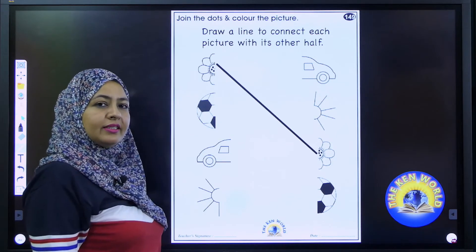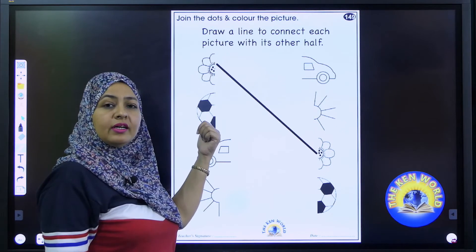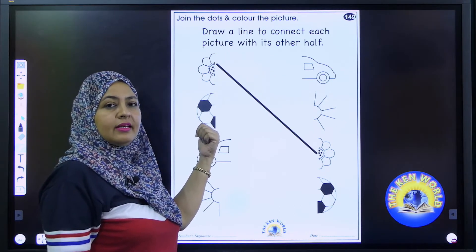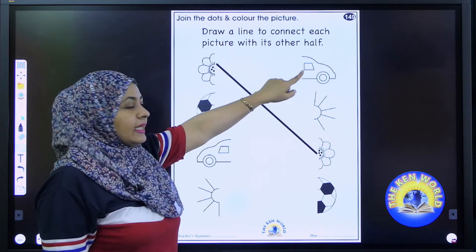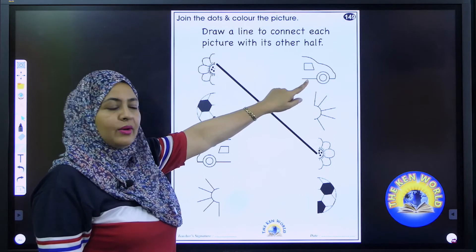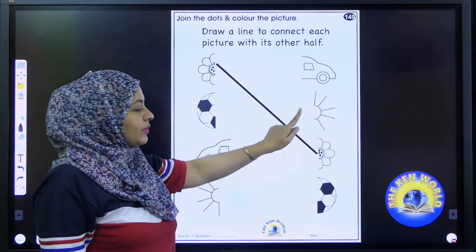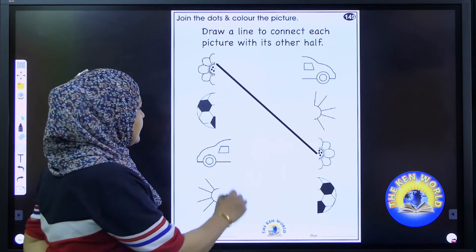Got it? Now tell me which picture is this one? It is a picture of a football. Now search out where its other half. Is this one? No. Is this one? No. Is this one? No. Is this one? Yes. Now join it.